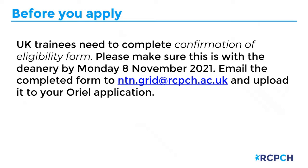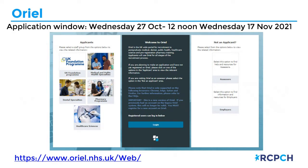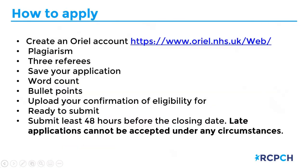Send the completed form back to us at the ntn.grid email address and upload it to your Oriel application. Applications are made through Oriel. We have all information in our applicant guide - I would definitely recommend downloading and reading through that. If you've set up an account last year you should be fine, but if you set up an account previously before last year you'll need to create a new account as they updated the system and all older accounts have been deleted. Please ensure the email address is current and the same one you use for your e-portfolio.